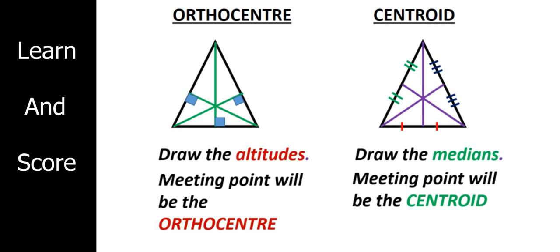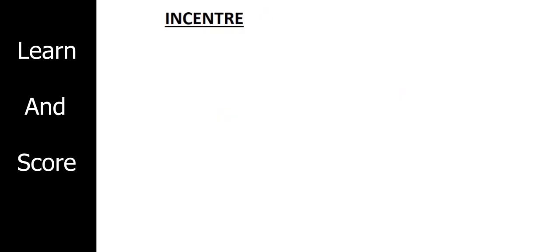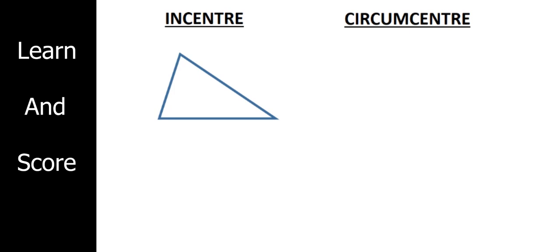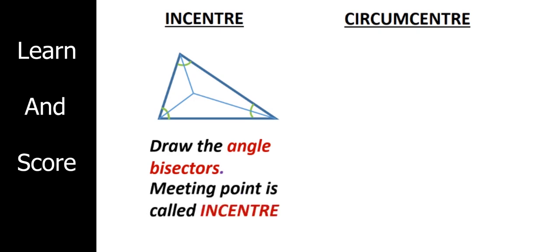Next we have to discuss about in-center. I drew a triangle, and we know about angle bisectors — I have already uploaded a video on that and I will drop the link in the description box. There are three angles in total, and we have to draw all three angle bisectors. They will meet each other, and that meeting point is the in-center. Place the metal tip of the compass on the in-center and draw a circle — that circle will be inside the triangle and it will touch all the sides of the triangle.